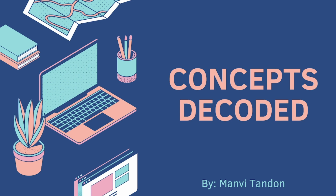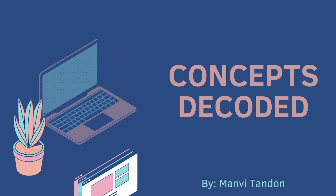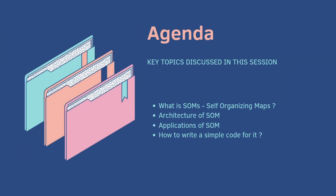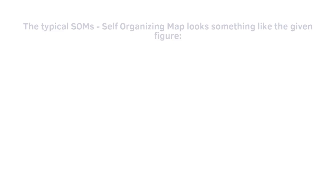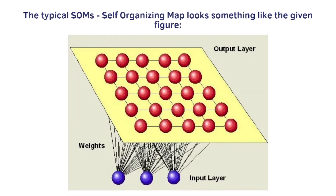Welcome back to our YouTube channel Concepts Decoded. Today we will be starting a topic called Self-Organizing Maps. It's a type of ANN that belongs to the family of unsupervised learning algorithms. Its primary purpose is to enable the visualization and analysis of high-dimensional data. SOMs can be used to implement fraud detection or visualizations.